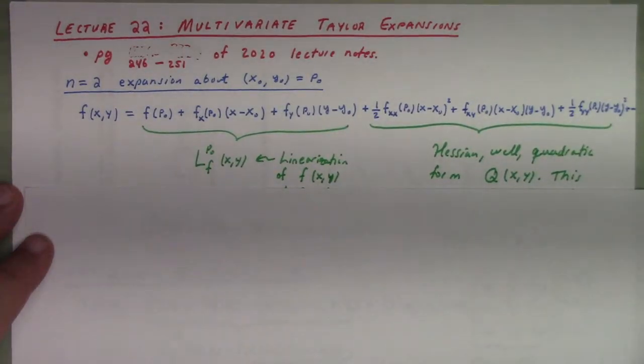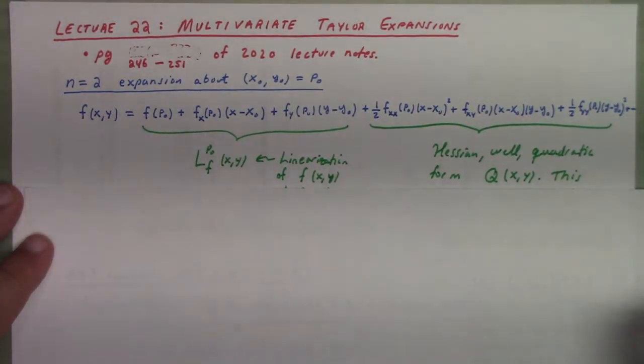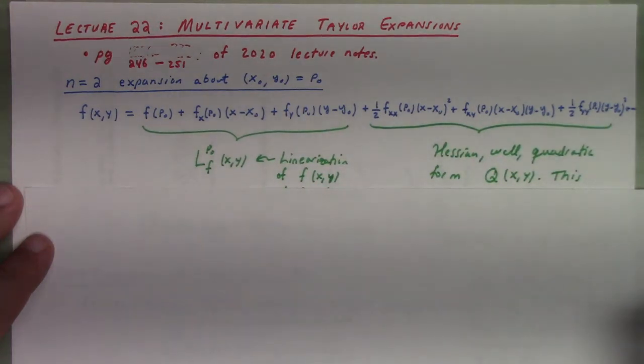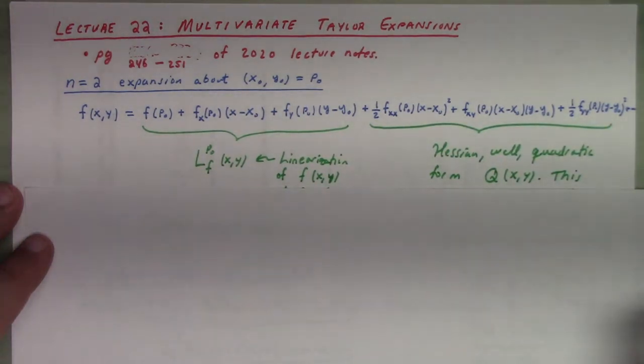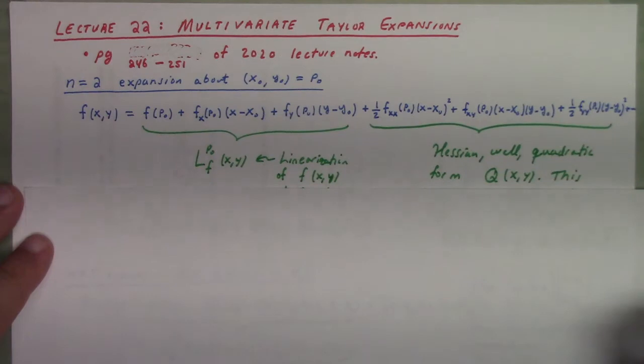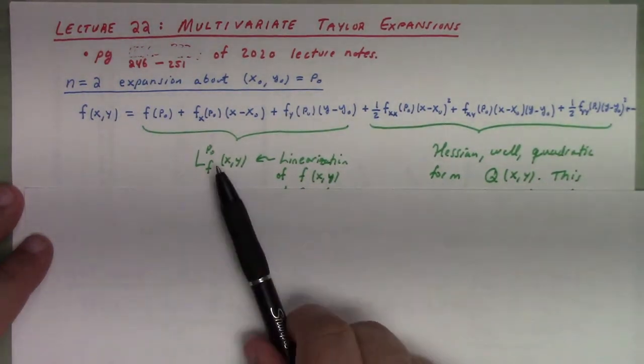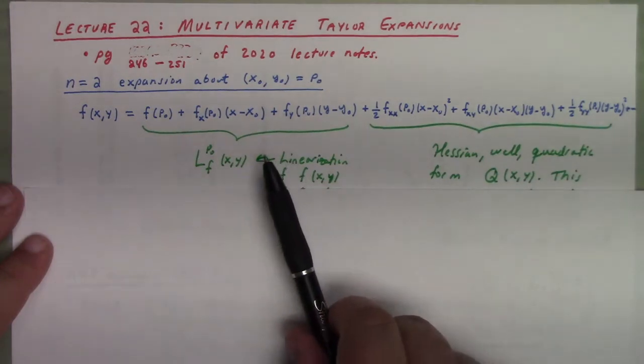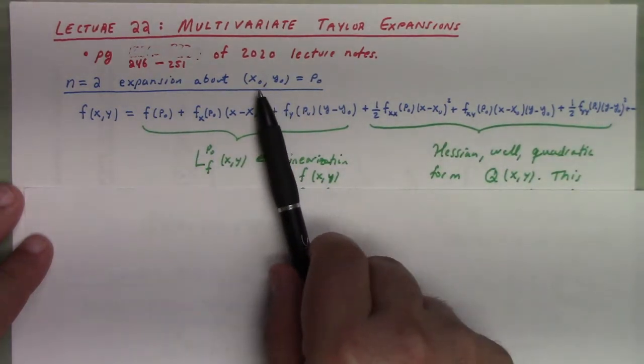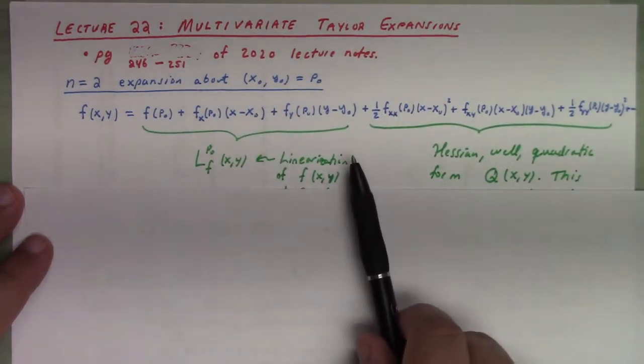So, let's begin lecture 22 on the multivariate Taylor expansion. This is based on pages 246 to 251 of the 2020 lecture notes. I'm just diving straight in here. This is the Taylor expansion of a function of two variables at the point x naught, y naught, centered at x naught, y naught, just to second order.